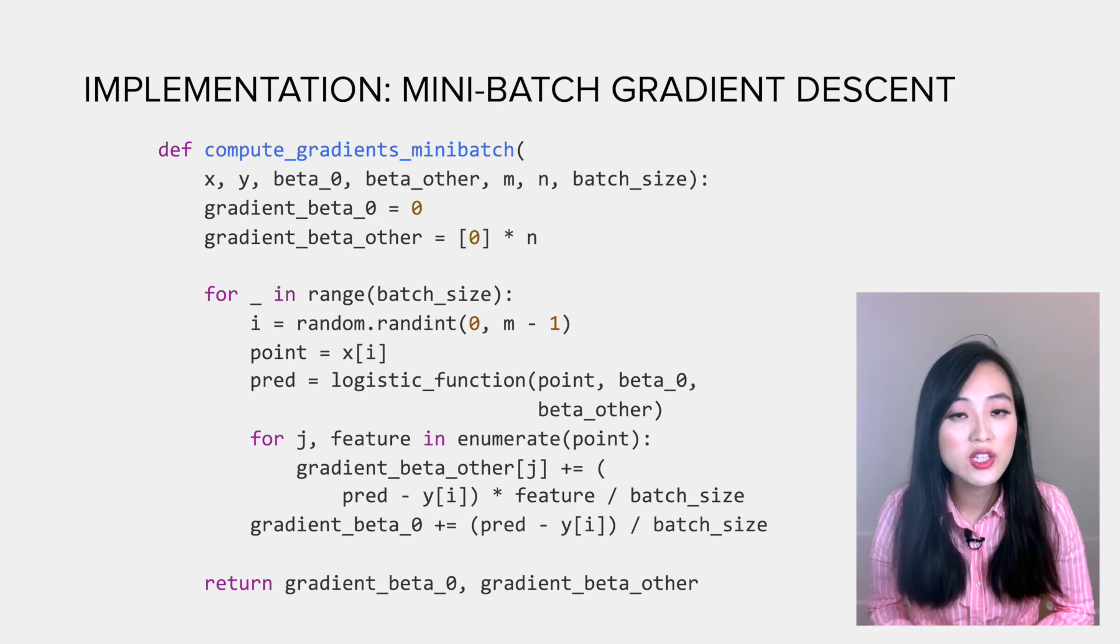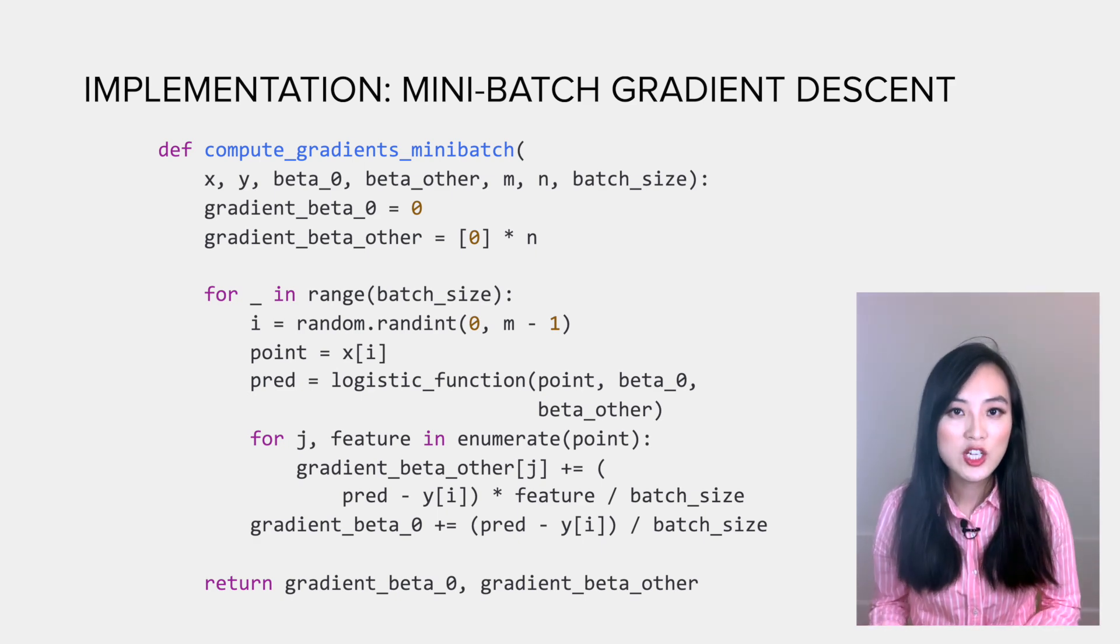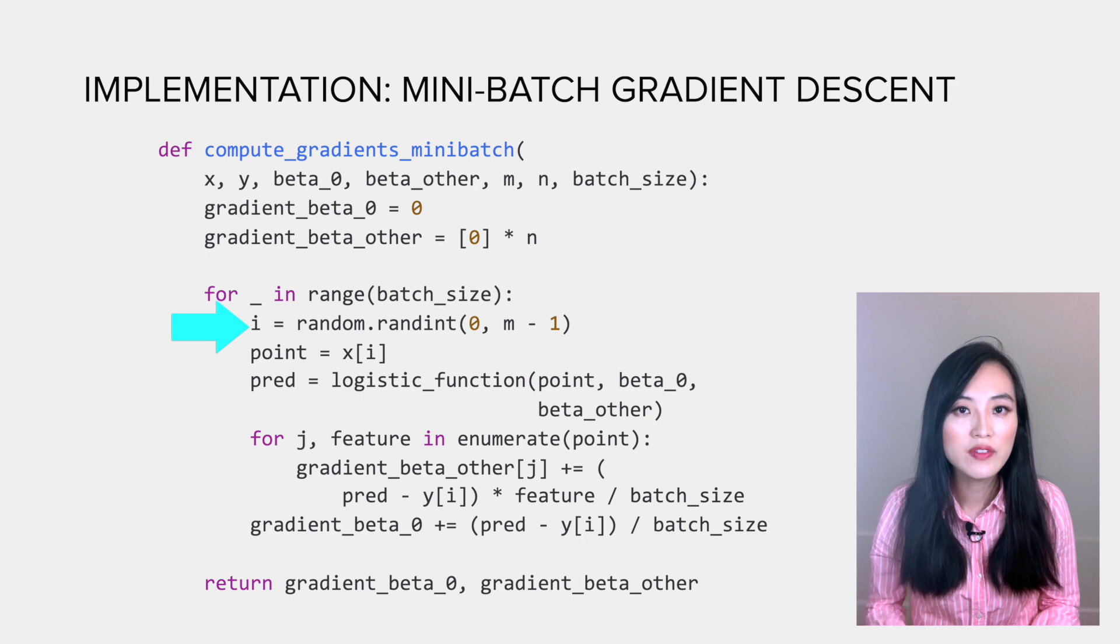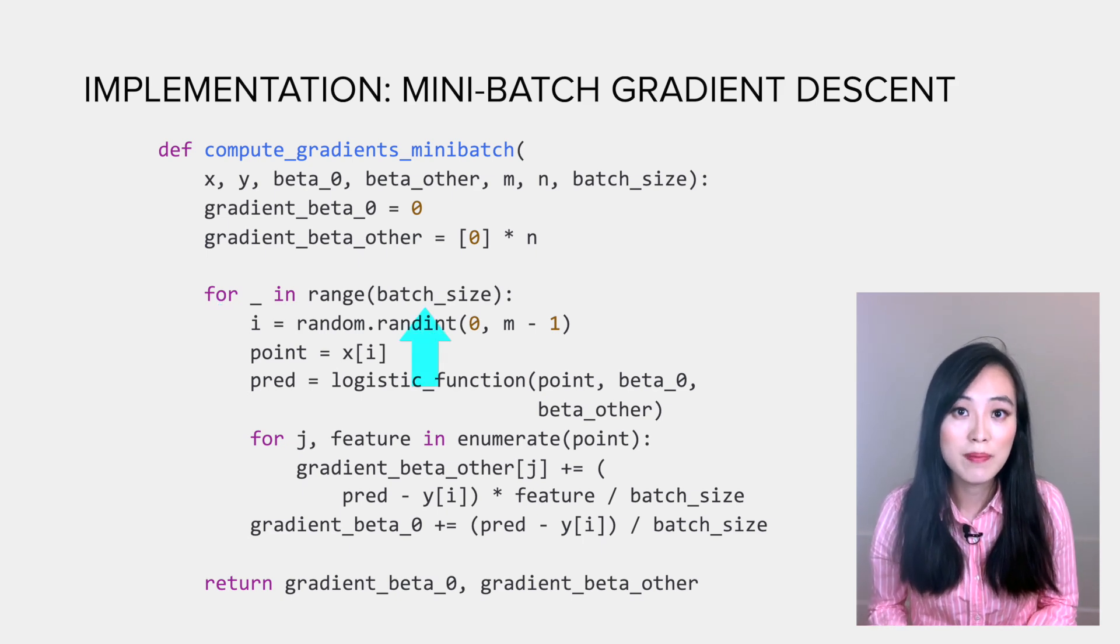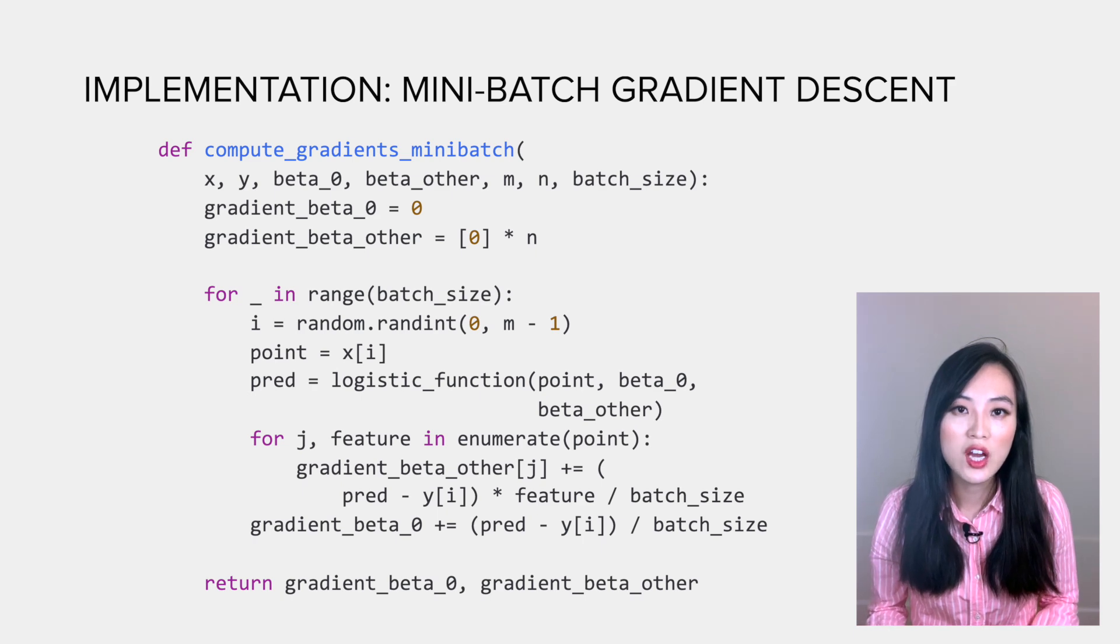Once you understand the concept, the implementation is pretty straightforward. In fact, there are only small changes we need to make to use mini-batch gradient descent. In the compute_gradients function, we add another input parameter batch_size, and each time we randomly sample a number of data points with size equal to the batch_size. Then the gradients are computed as a mean of gradients contributed by those data points.